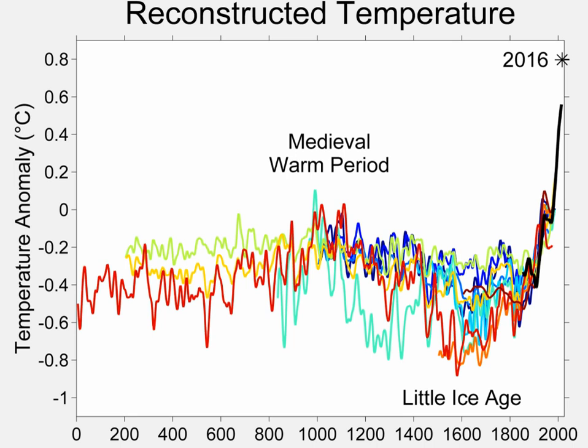Another possibility is that there was a slowing of thermohaline circulation. The circulation could have been interrupted by the introduction of a large amount of fresh water into the North Atlantic, possibly caused by a period of warming before the Little Ice Age known as the Medieval Warm Period. There is some concern that a shutdown of thermohaline circulation could happen again as a result of the present warming period.